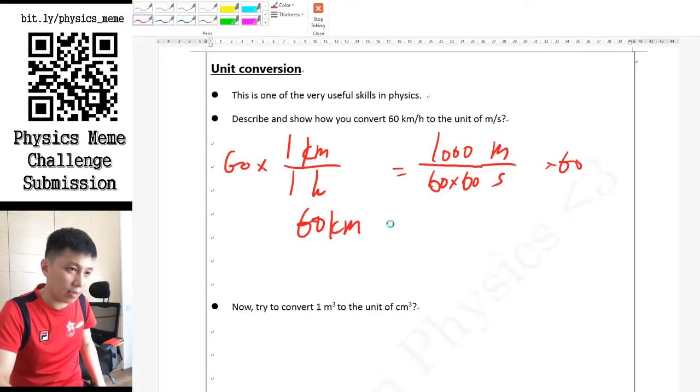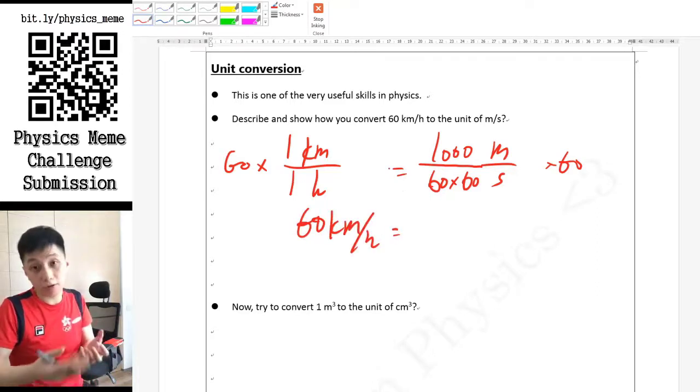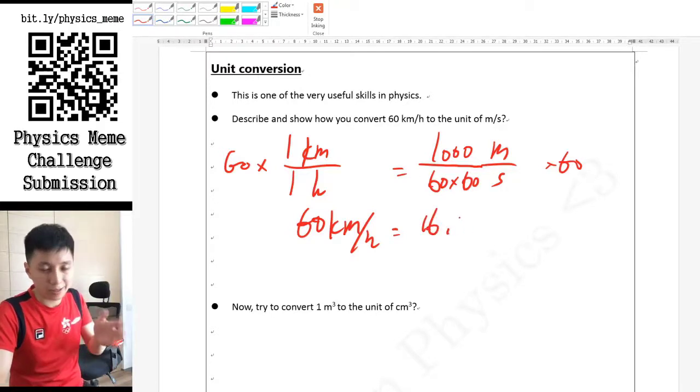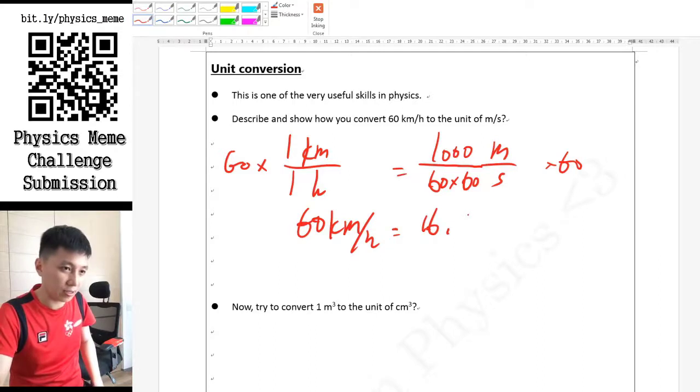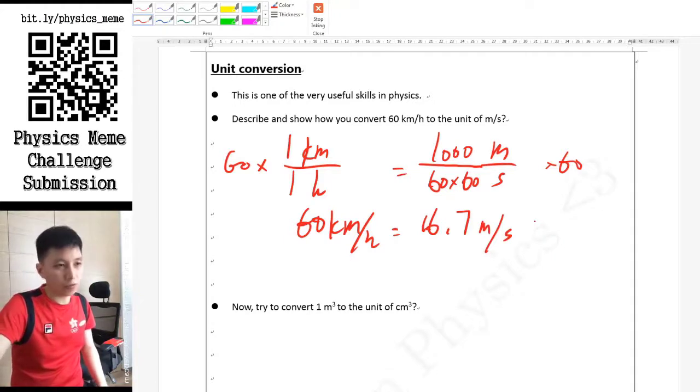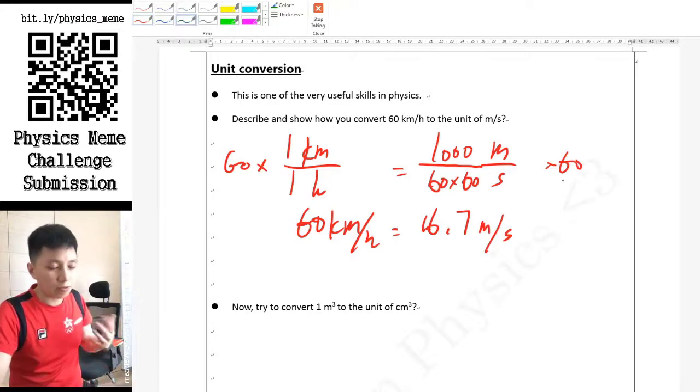Some of you may already know it's 3600. In that case, you'll be able to find out that 60 km per hour, if you use your calculator, should be 16.6667, so let's just put 16.7 meter per second. This should align with what we find on Google as well.